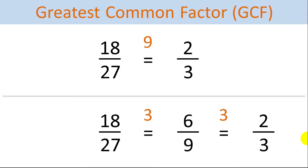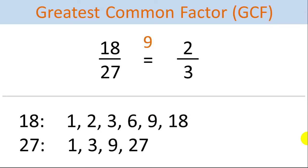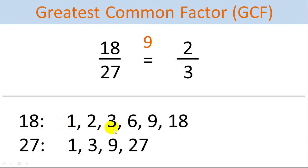So let's figure out how we can calculate the Greatest Common Factor. We can list out the factors for each of the two numbers. Here we list out all the factors for 18: 1, 2, 3, 6, 9, and 18, because 18 is divisible evenly by all these numbers. 1 times 18 equals 18, 2 times 9 equals 18, and 3 times 6 equals 18.